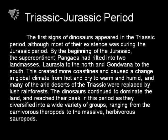The first signs of dinosaurs appeared in the Triassic period, although most of their existence was during the Jurassic period. By the beginning of the Jurassic, the supercontinent Pangea had rifted into two land masses called Laurasia and Gondwana. This created more coastlines and caused a change in global climate, making it more inhabitable for dinosaurs. Dinosaurs continued to dominate the land and reached their peak in this period as they diversified into a wide variety of groups, ranging from the carnivorous theropods to the massive sauropods.